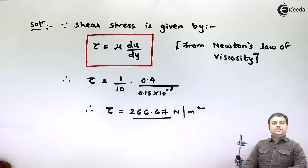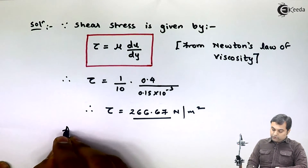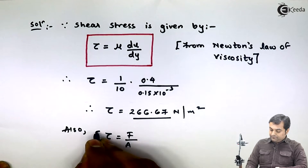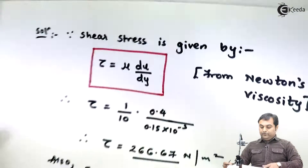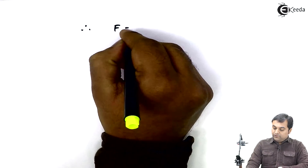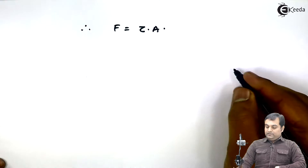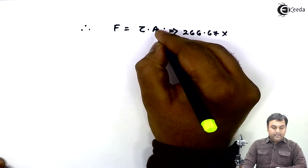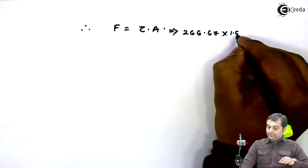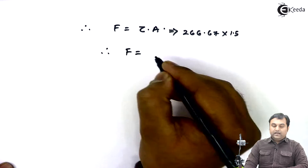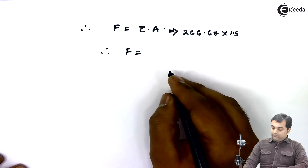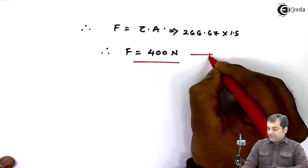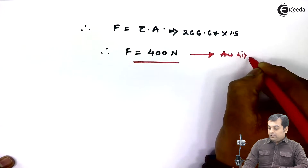Now that we have shear stress, we can easily get the force. Since shear stress = force / area, therefore force = shear stress × area = 266.67 × 1.5 m². This gives the force as 400 Newton. This is the first answer.